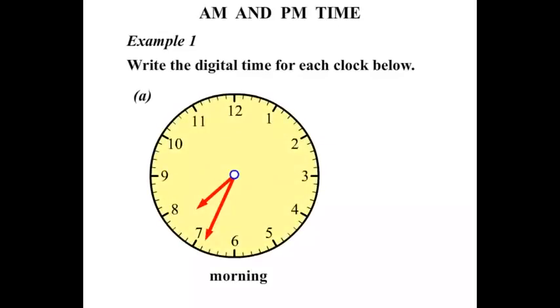Example one: write the digital time for each clock below. Got a clock here. Now the digital time, you should be pretty good at this already. It's 7:34. Now it's in the morning. The morning of course is before midday, so it's AM. When you see the morning, AM.